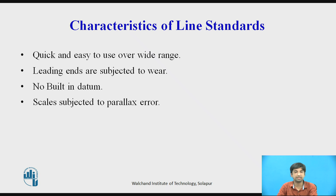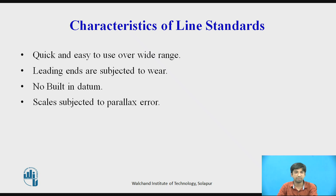A scale does not possess a built-in datum; therefore, it is not possible to align the scale with the axis of measurement. Scales are subjected to Parallax Error. Parallax Error refers to the change in the apparent position of an object when viewed from different points. For example, the use of a mirror behind the readout pointer or indicator virtually eliminates occurrence of Parallax Error. Also, the assistance of a magnifying glass or microscope is required if sufficient accuracy is to be achieved.